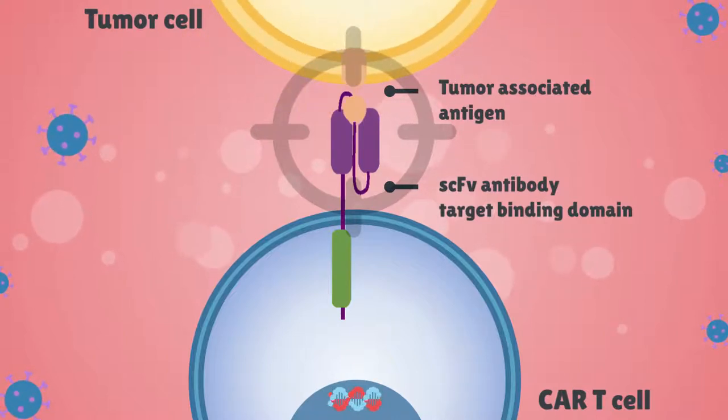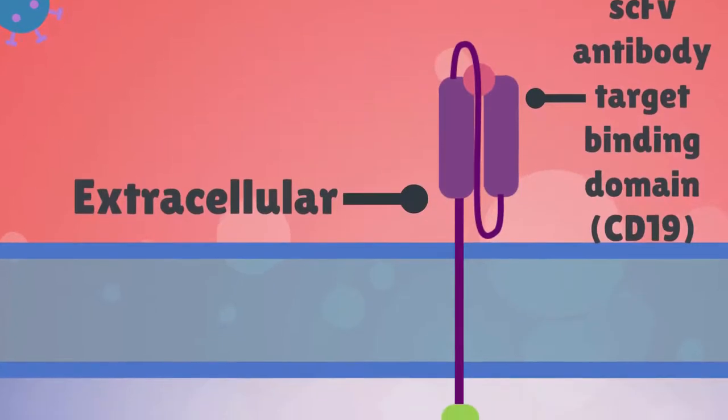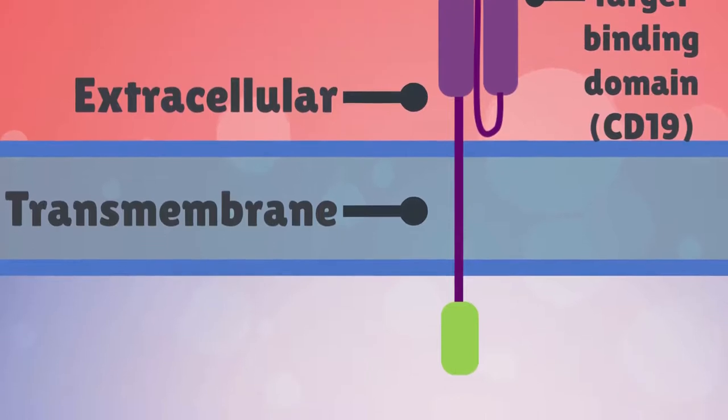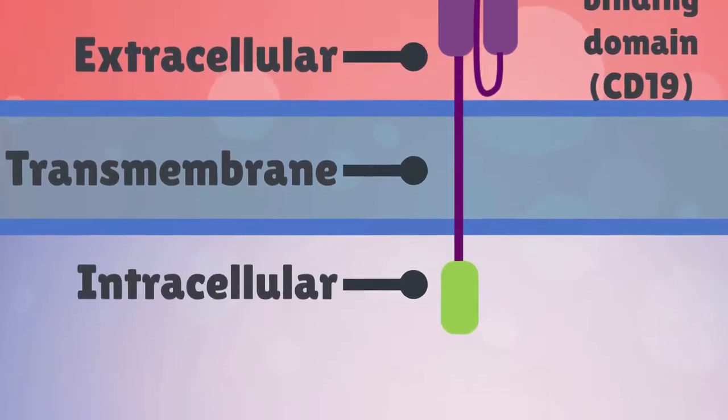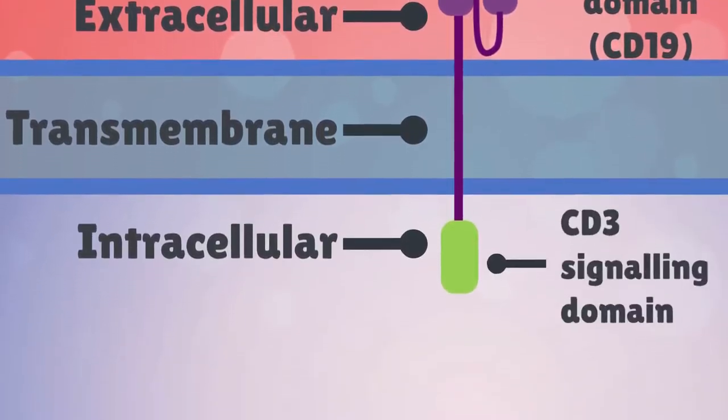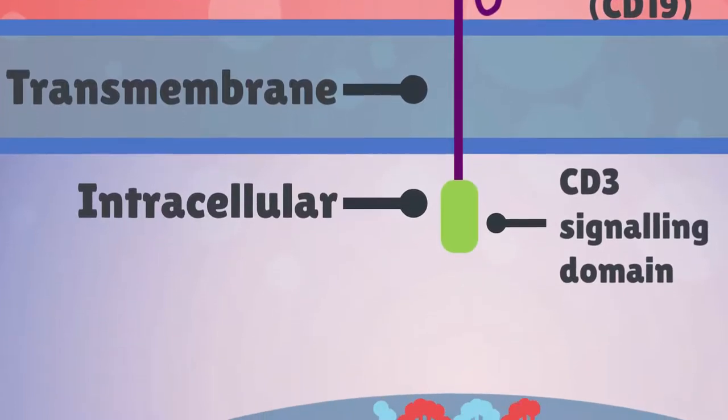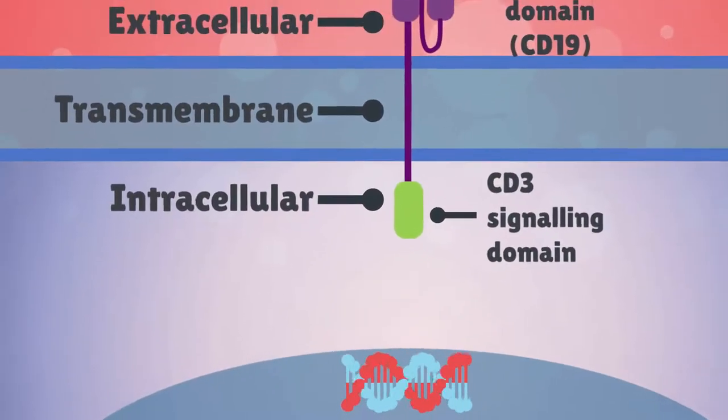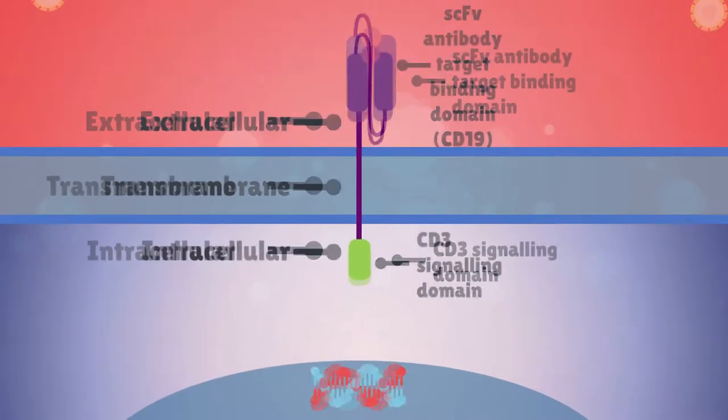The transmembrane domain is where the CAR binds to the cell membrane. The intracellular domain contains the CD3 zeta. This is the T-cell signaling portion of the receptor. The first generation only had the CD3 zeta region, which was required for activation and cytotoxicity.